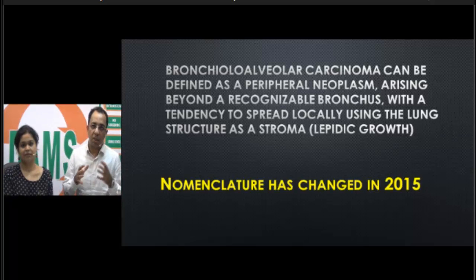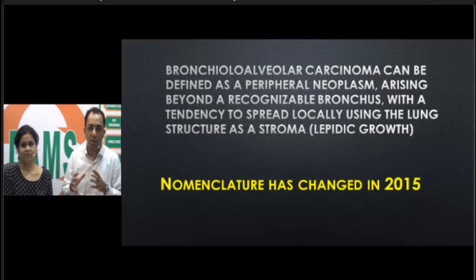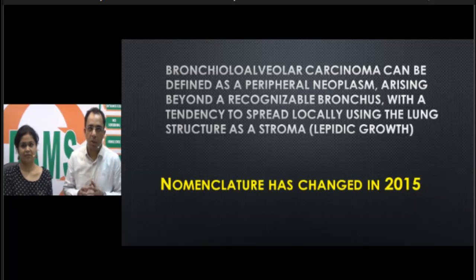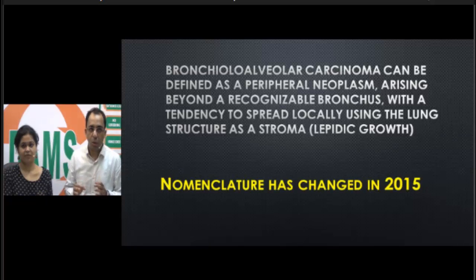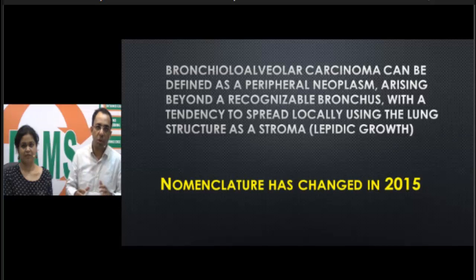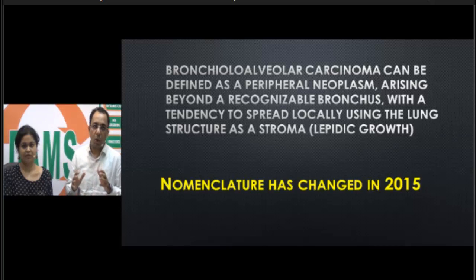Classically, bronchoalveolar cancer was defined as a peripheral neoplasm arising beyond a recognizable bronchus, with a tendency to spread locally using the lung structure as the stroma — which has been called lepidic spread. This entire nomenclature of bronchoalveolar cancer has been changed in 2015.